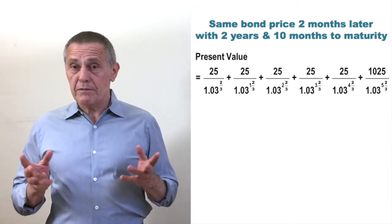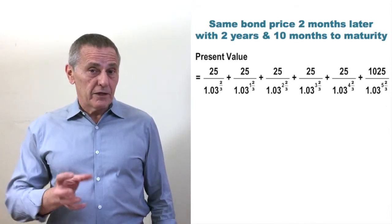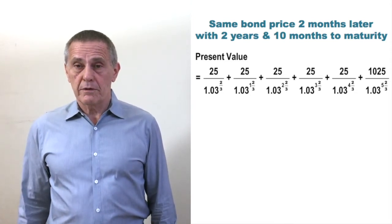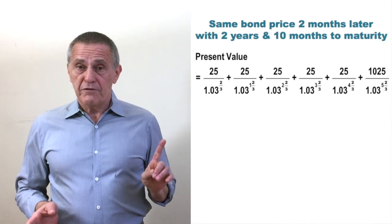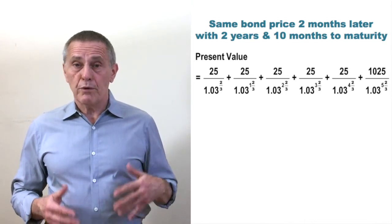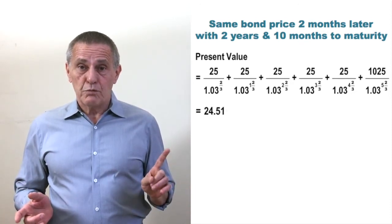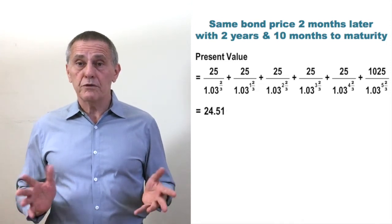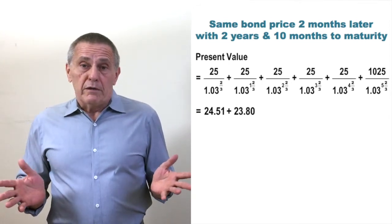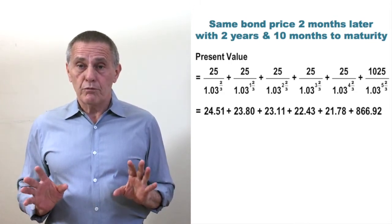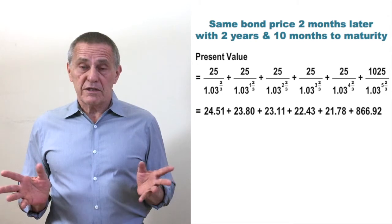How do we get the price of the bond now that it's got two years and ten months to maturity? Well, the process is generally the same, although as we'll see when we get near the end, there's one additional twist that has to be factored in. But the next step is finding the present value of each of the individual cash flows. So, now we're discounting the first $25 coupon by $1.03 raised to the two-thirds power, which gives us a present value of $24.51. The second coupon of $25 is discounted by $1.03 to the one and two-thirds power, or a present value of $23.80. And so forth all the way until the final cash flow, the $1,025 due at maturity, discounted by $1.03 raised to the five and two-thirds power, which gives us a present value of $866.92.